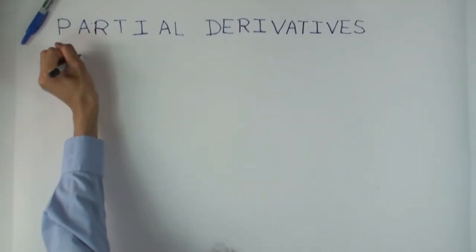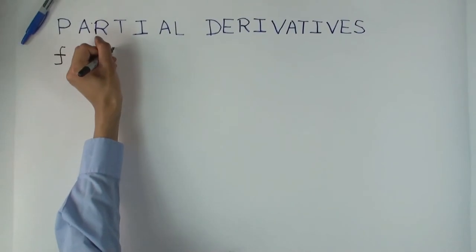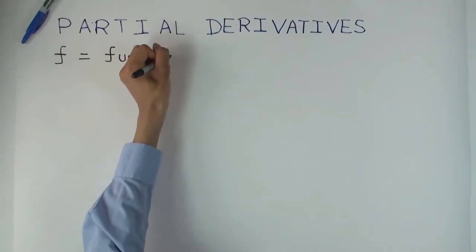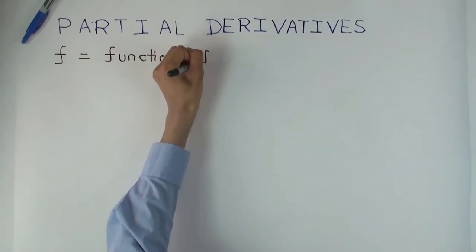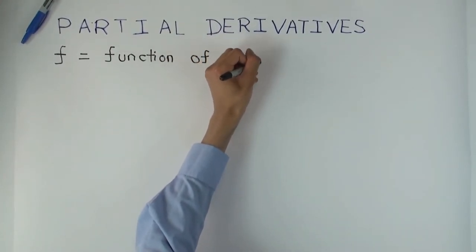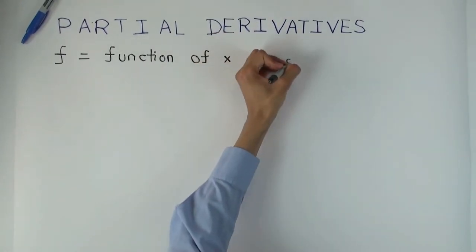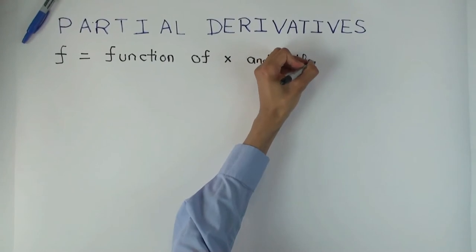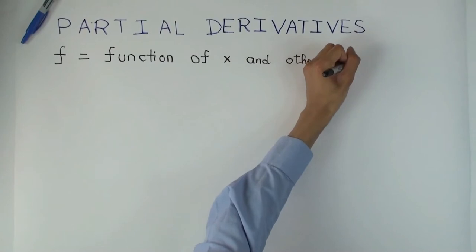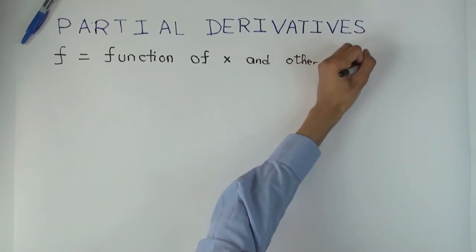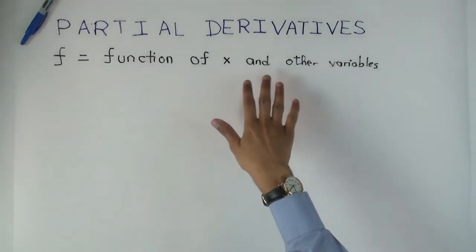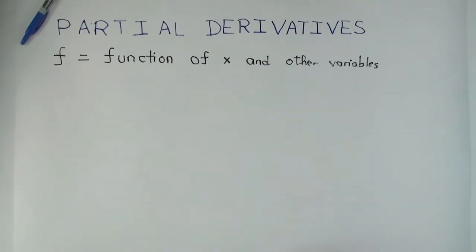Let f be a function of more than one variable, where one of the inputs is x and there are other variables. So f is a function of x and other variables, and the goal will be to explain what the partial derivative of f is.